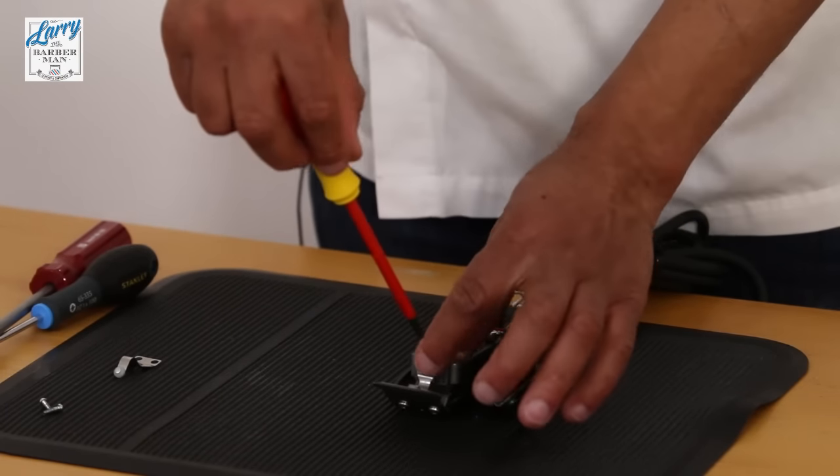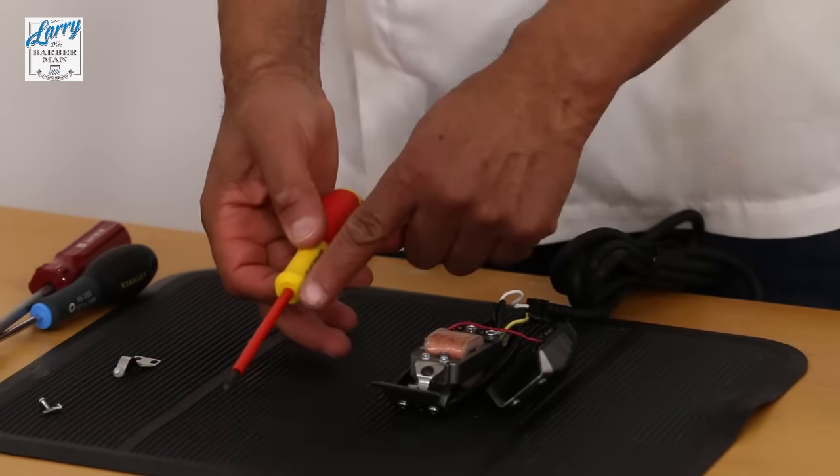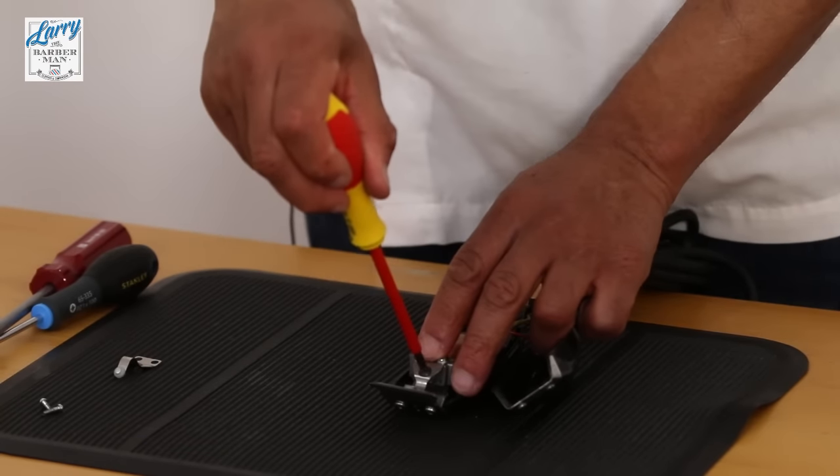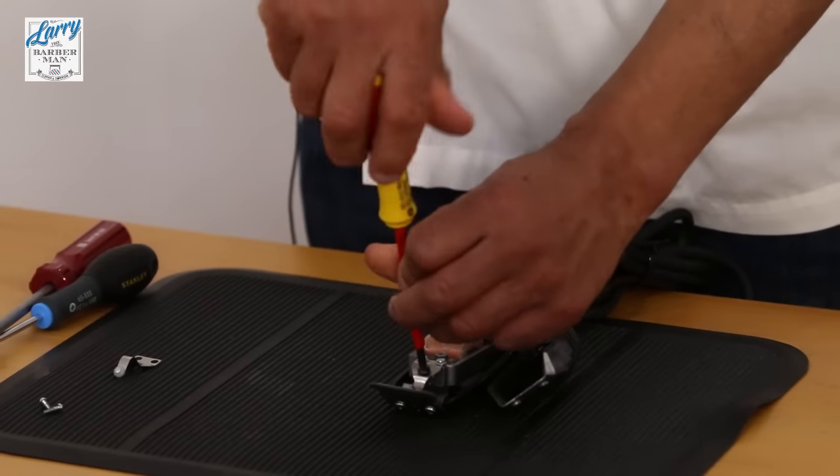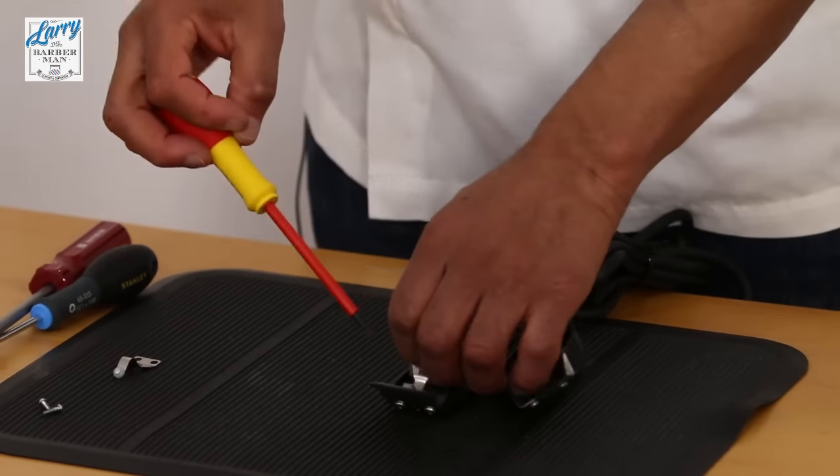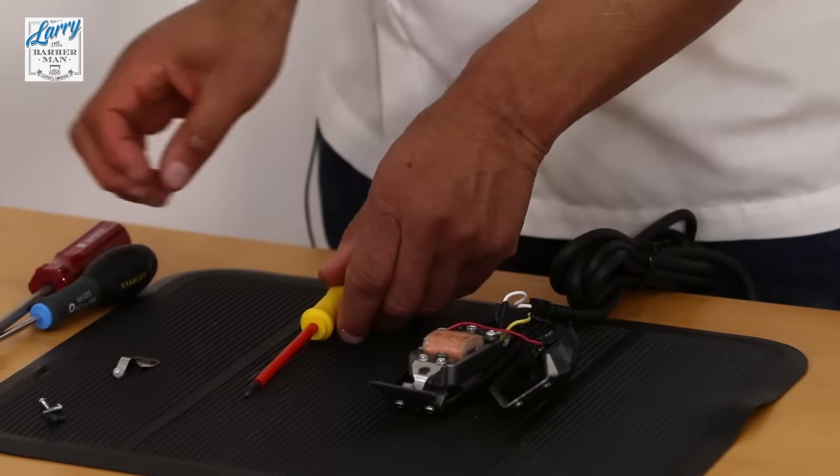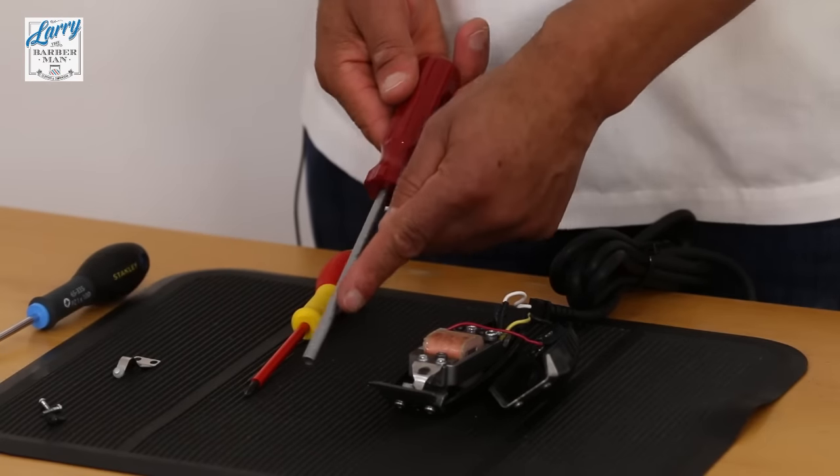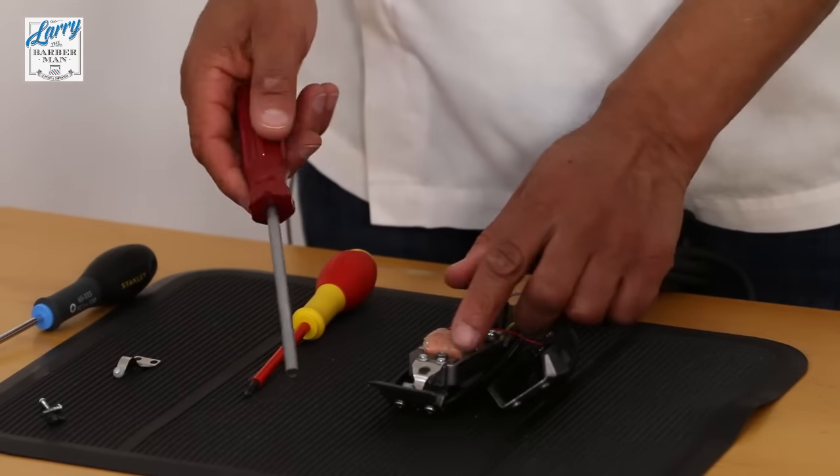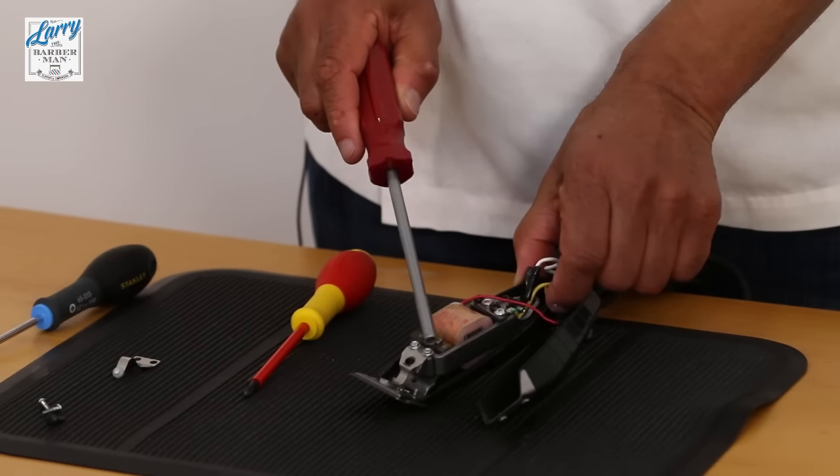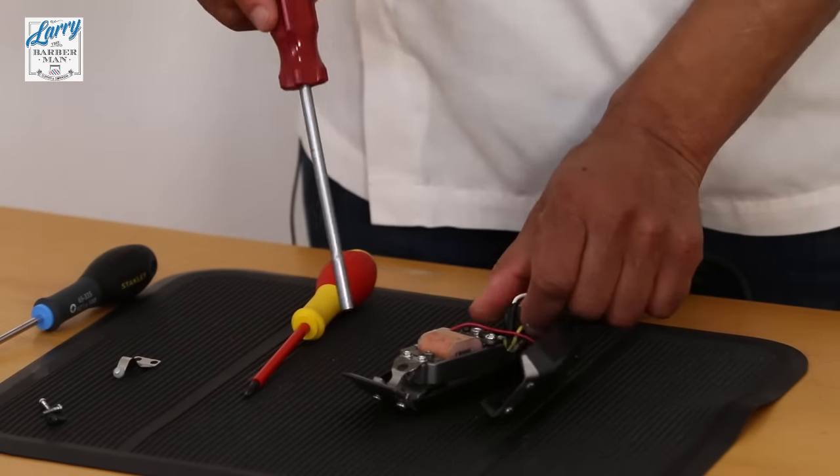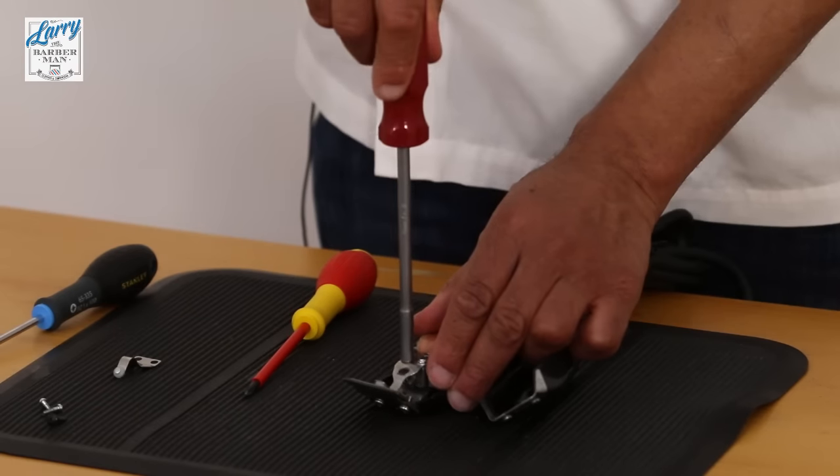So first and foremost we want to take out the tension screw out of the spring with the Phillips screwdriver. So simple just turn it anti-clockwise and it comes out. Again put that to the side. Then get your nut twister or spanner, whichever way you want to do it, five millimeter, and then we need to remove these two nuts from here.